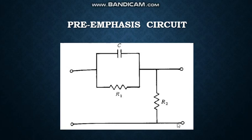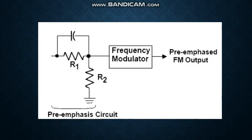This is a pre-emphasis circuit. The pre-emphasis circuit is a simple RC circuit: R1 and C in parallel and in series with R2. The pre-emphasis circuit is used before the frequency modulator. Then we get pre-emphasis FM output.